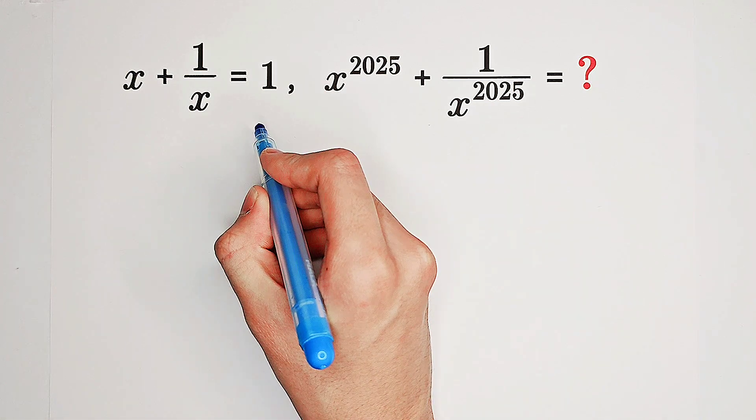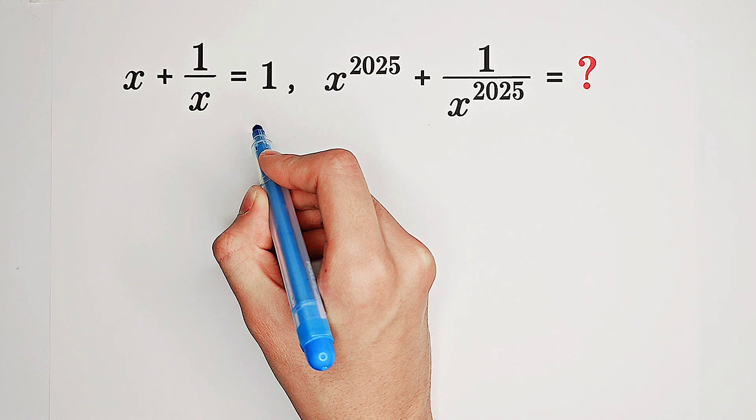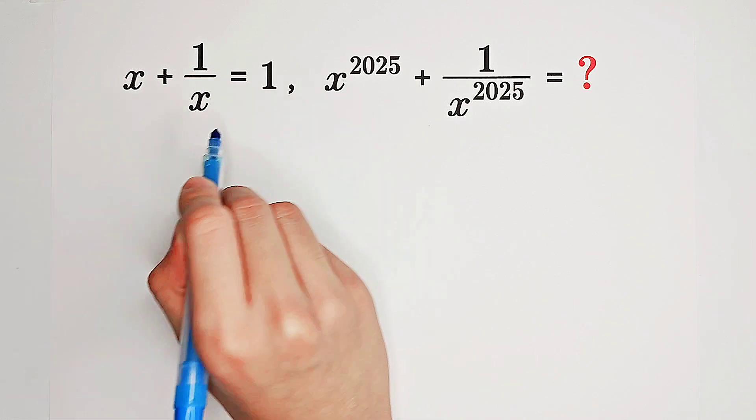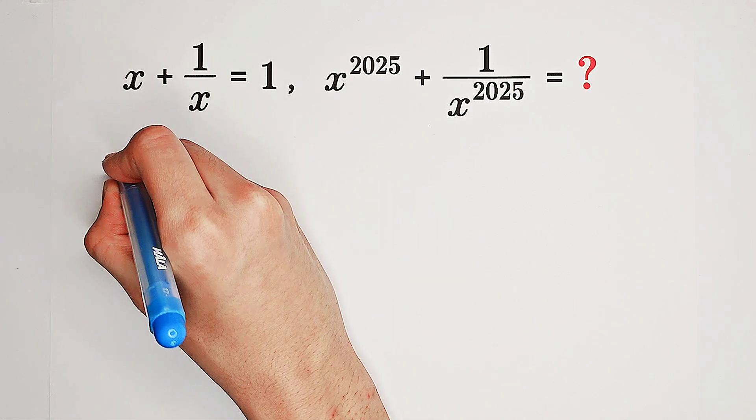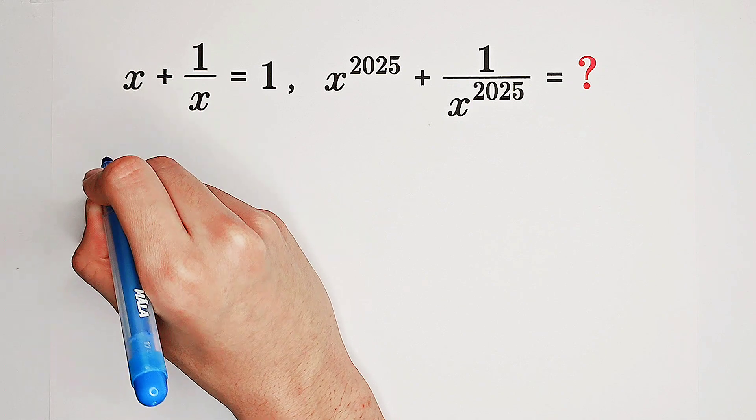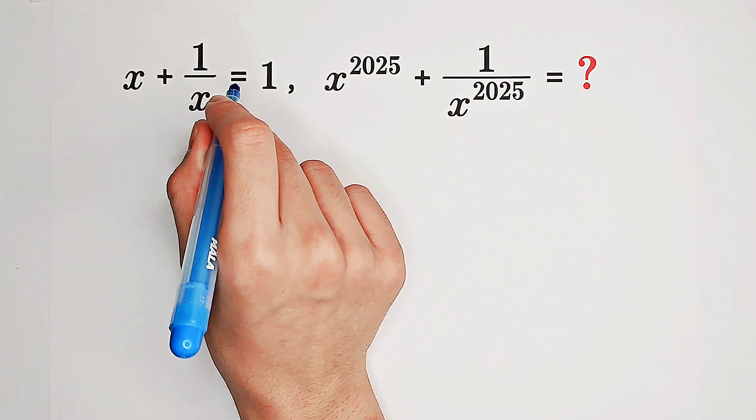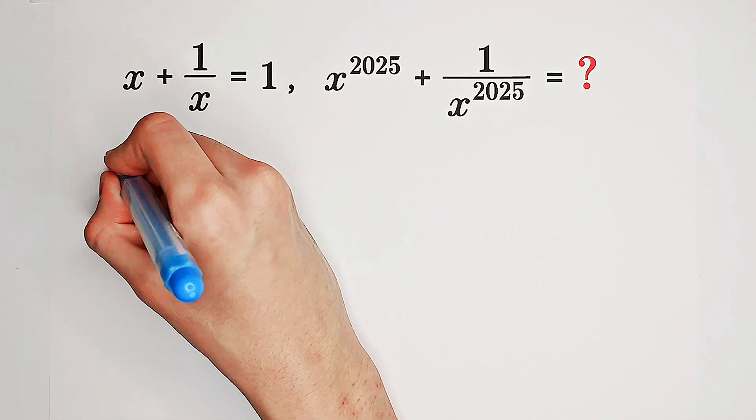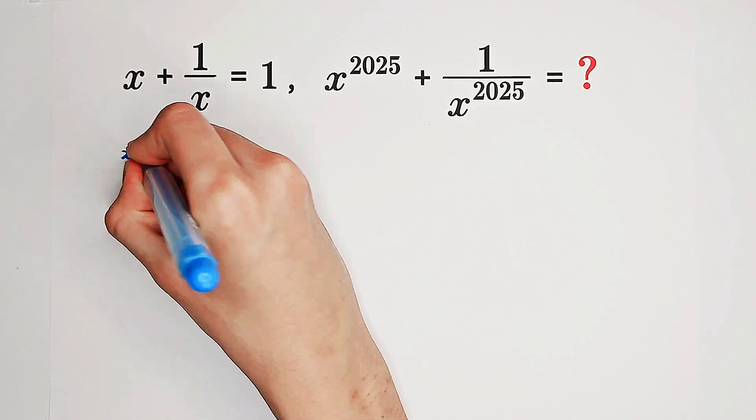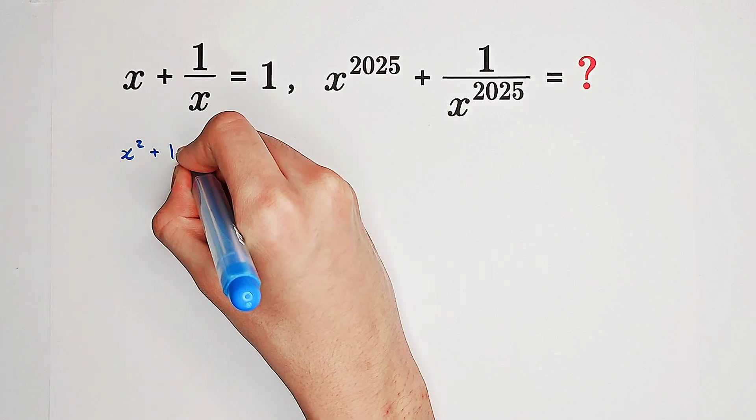Firstly, what can we do about this equation? It is of course a quadratic equation about x, because we can multiply both sides by x. Then we get x squared plus 1 equals x.